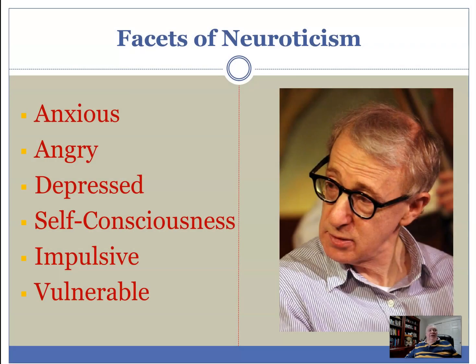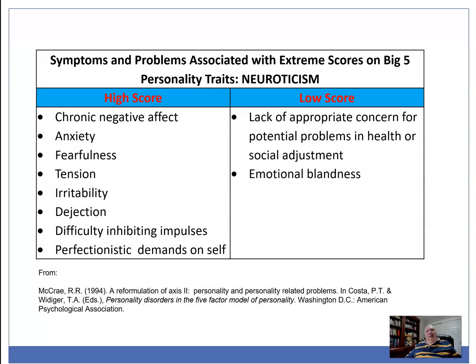The six facets of neuroticism are anxiety, anger, depression, self-consciousness, impulsivity, and vulnerability — quite a nice mix of things that stress people out. Extreme high neurotic individuals have chronic negative affect, anxiety, fearfulness, and tension. They have difficulty inhibiting impulses and they're perfectionistic.